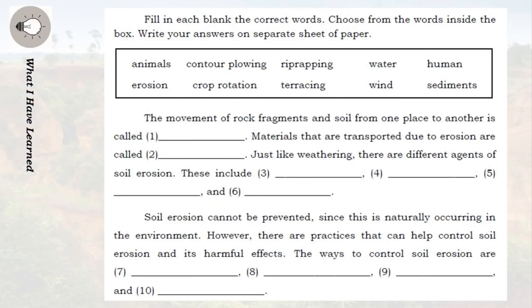Fill in each blank with the correct words. Choose from the words inside the box. Write your answers on a separate sheet of paper. Words: Animals, Contour plowing, Rip rapping, Water, Human, Erosion, Crop rotation, Terracing, Wind, Sediments. The movement of rock fragments and soil from one place to another is called (1) blank.